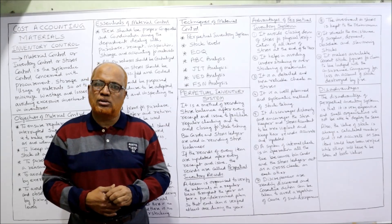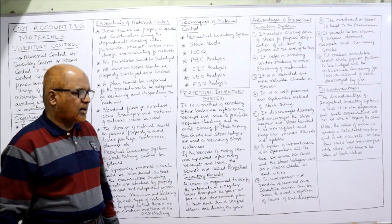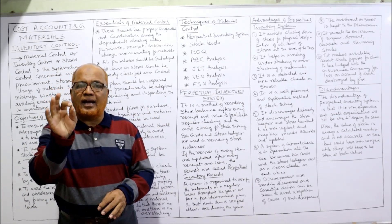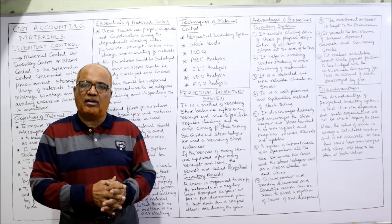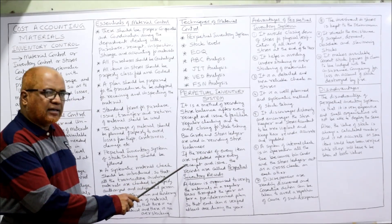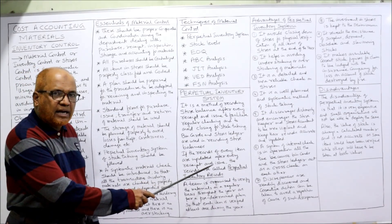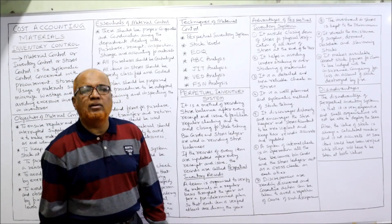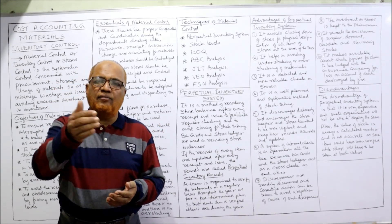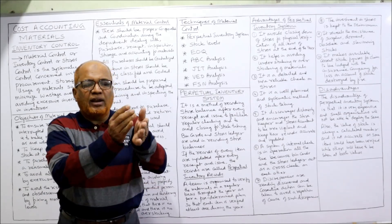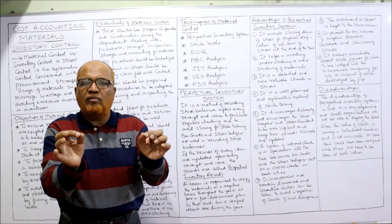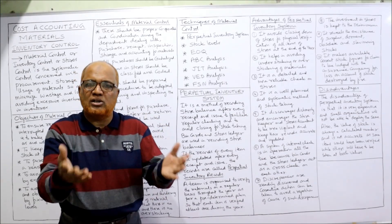Bin card and stores ledger are used to record the stores balance. These two records capture all movement of inventory. If the records of every item are updated after every receipt and issue, the records are called a perpetual inventory system. Whenever material is received, it is recorded in the receipt column and the balance is found; when material is issued, it is recorded in the issue column and the balance is struck. Always having an up-to-date balance is the essence of the perpetual inventory system.